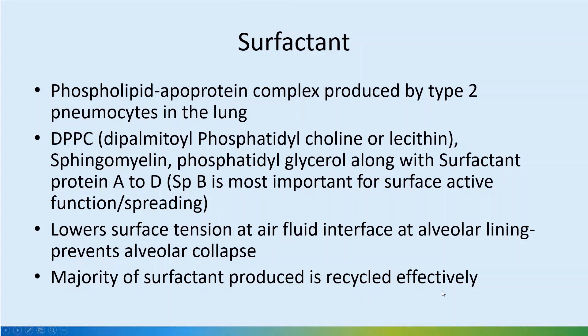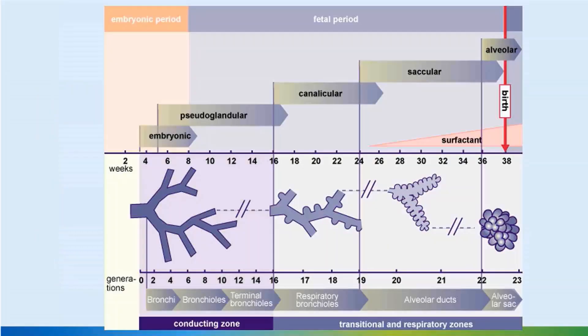The majority of surfactant produced is recycled effectively — around 80 percent of the surfactant in the system is recycled. In conditions like meconium aspiration or pulmonary hemorrhage, the surfactant is denatured and recycling doesn't work effectively. This condition is called secondary surfactant deficiency.